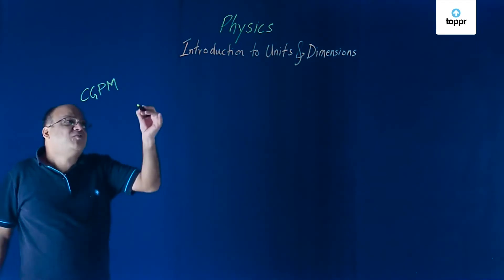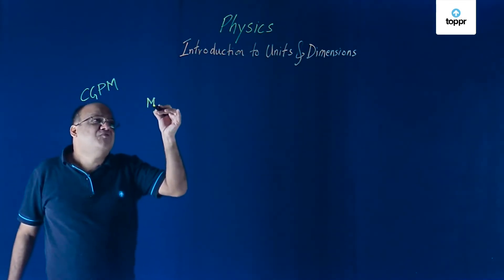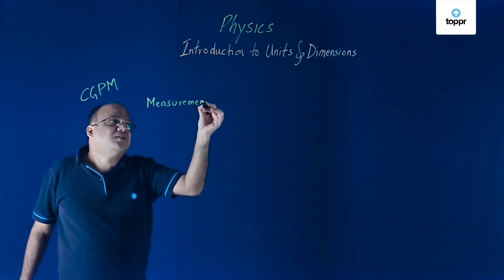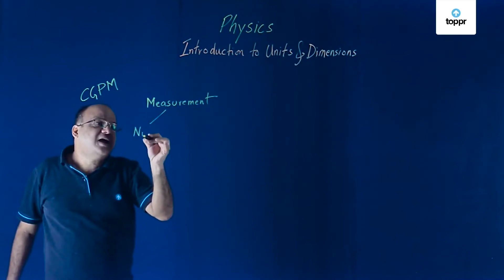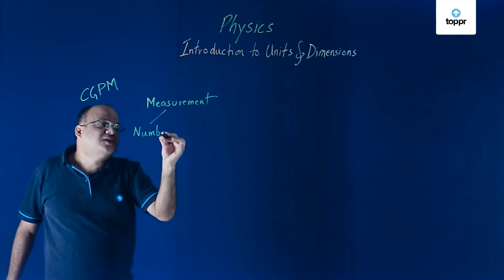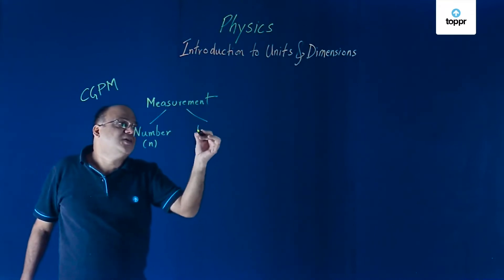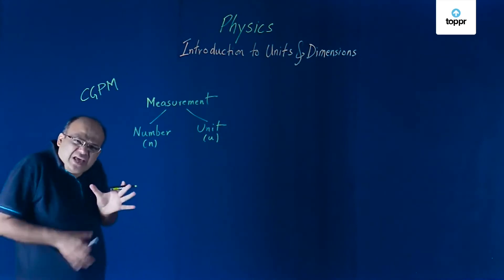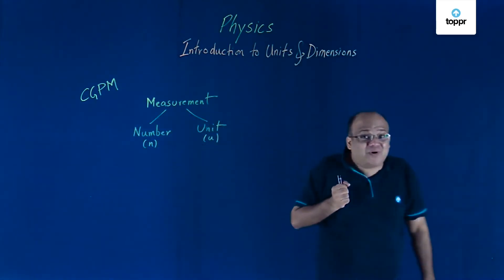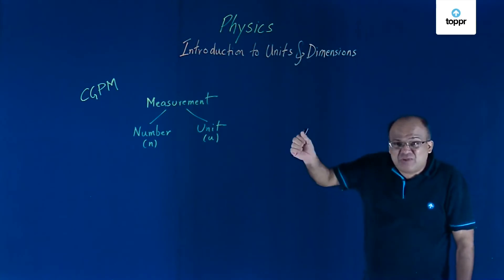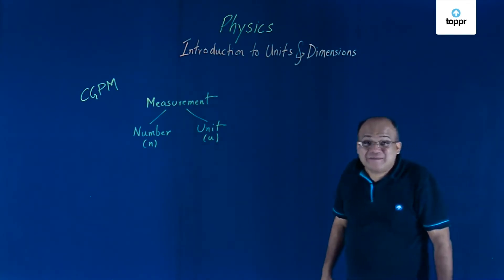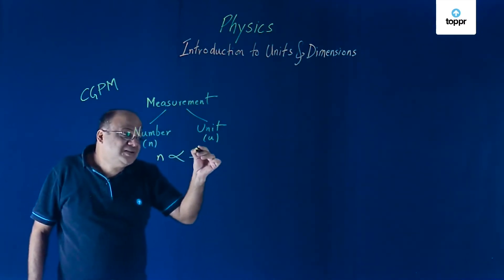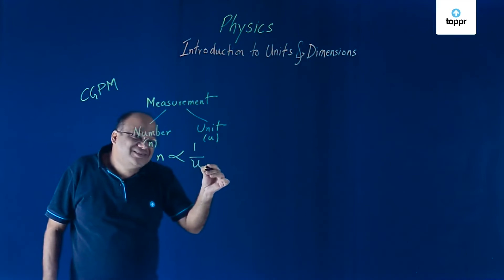Any measurement that we make will have a number and a unit. Two things are there, number and unit. Number N, unit U. Now, if the unit is big, number is small. If the unit is small, number is big. N is inversely proportional to size of unit. Not convinced?